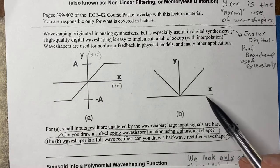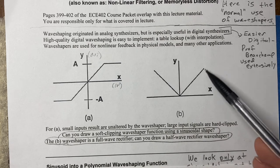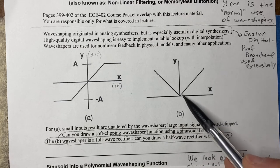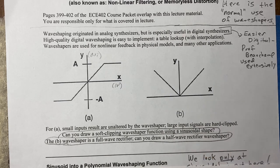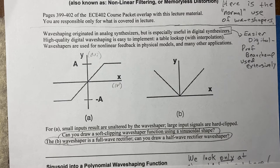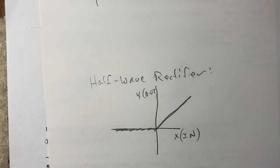Another example is a full wave rectifier: positive values remain unchanged, and negative values turn to positive on the output. How would you draw a half wave rectifier? Hopefully you drew something like that — there's a half wave rectifier.